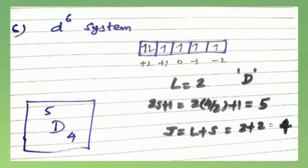For a d⁶ system, according to Hund's rule electrons are singly occupied and one extra electron fills dxy. The extra electron's charge cancels giving L=2, so term letter D. With S=2 (4 unpaired + extra), 2S+1=5. The configuration is more than half-filled, so J = L+S = 2+2 = 4. The term symbol is ⁵D₄.